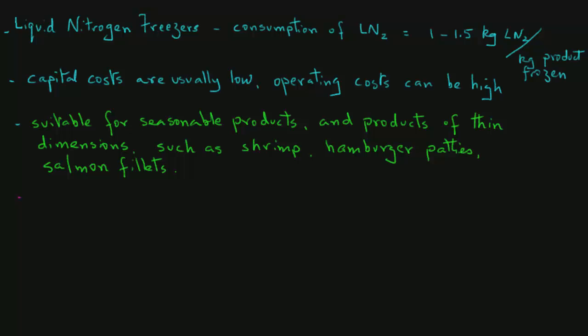When carbon dioxide is used as a cryogen, one should note that at atmospheric pressure, carbon dioxide exists either as a gas or a solid. A common method of using solid carbon dioxide is to mix solid carbon dioxide pellets with the food in a container to freeze the product.